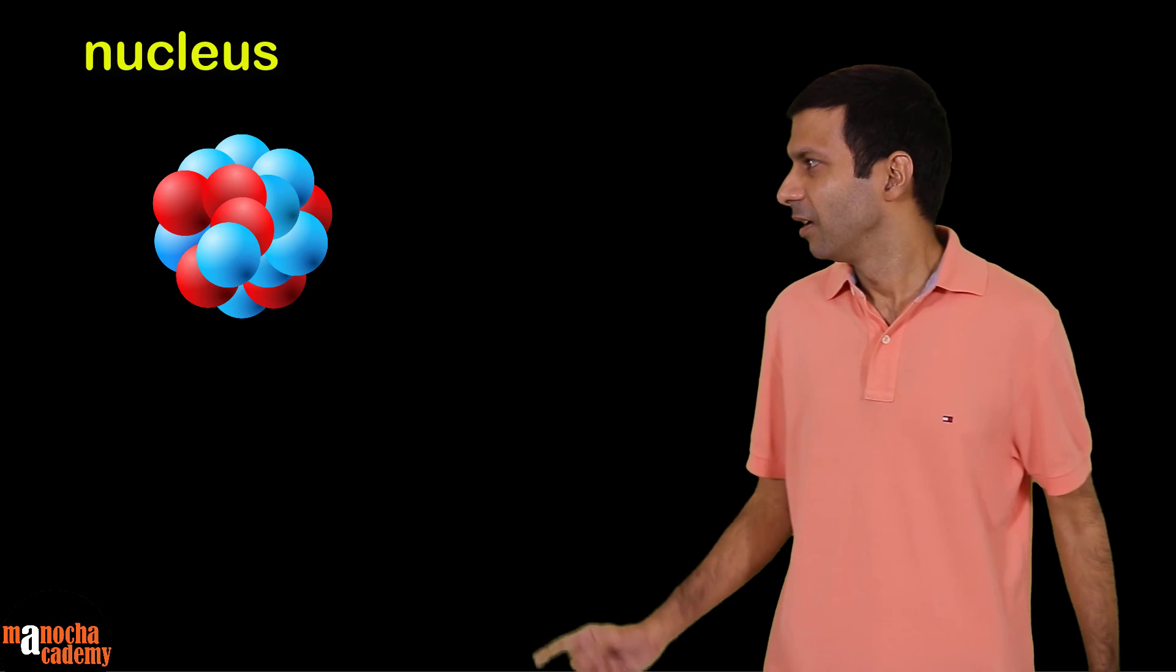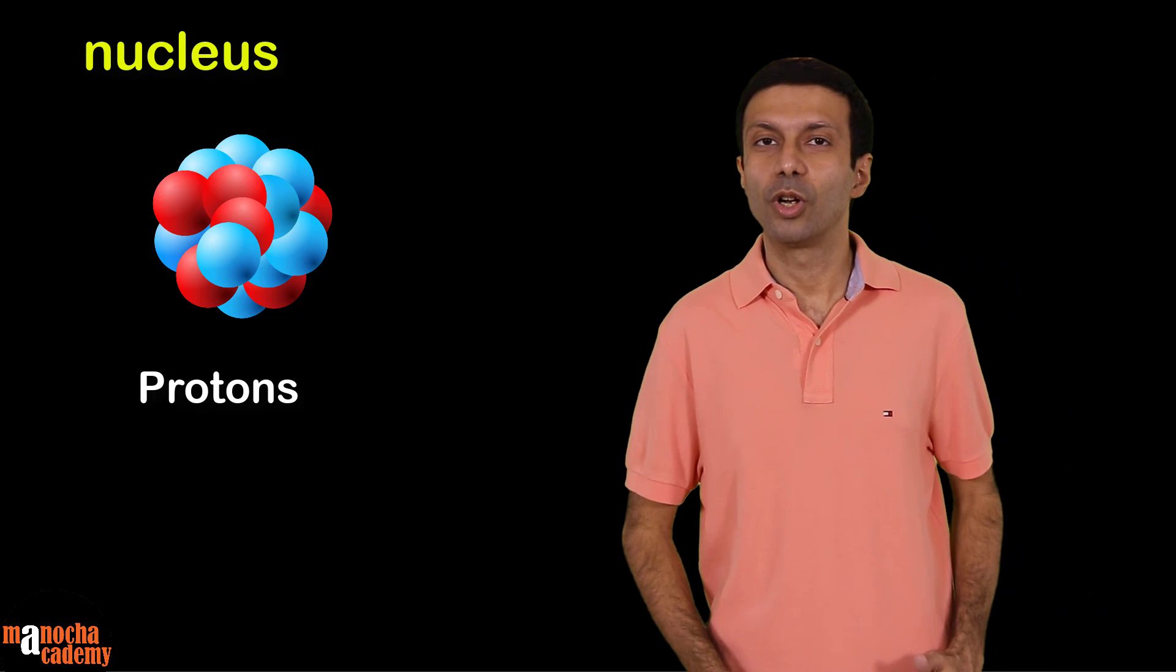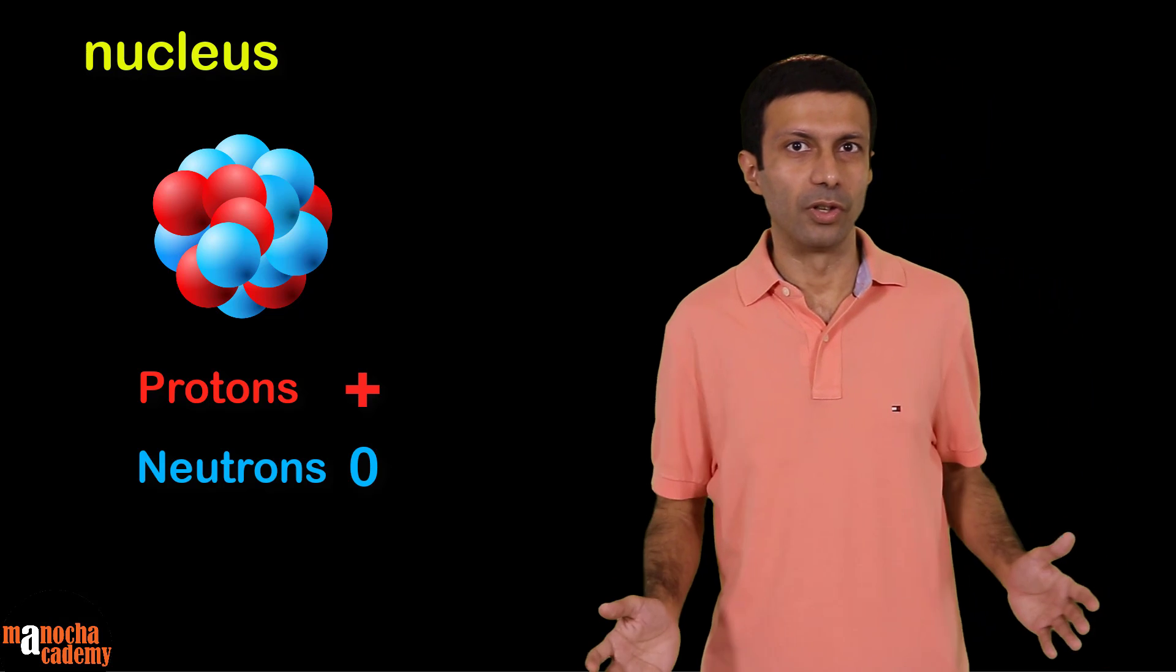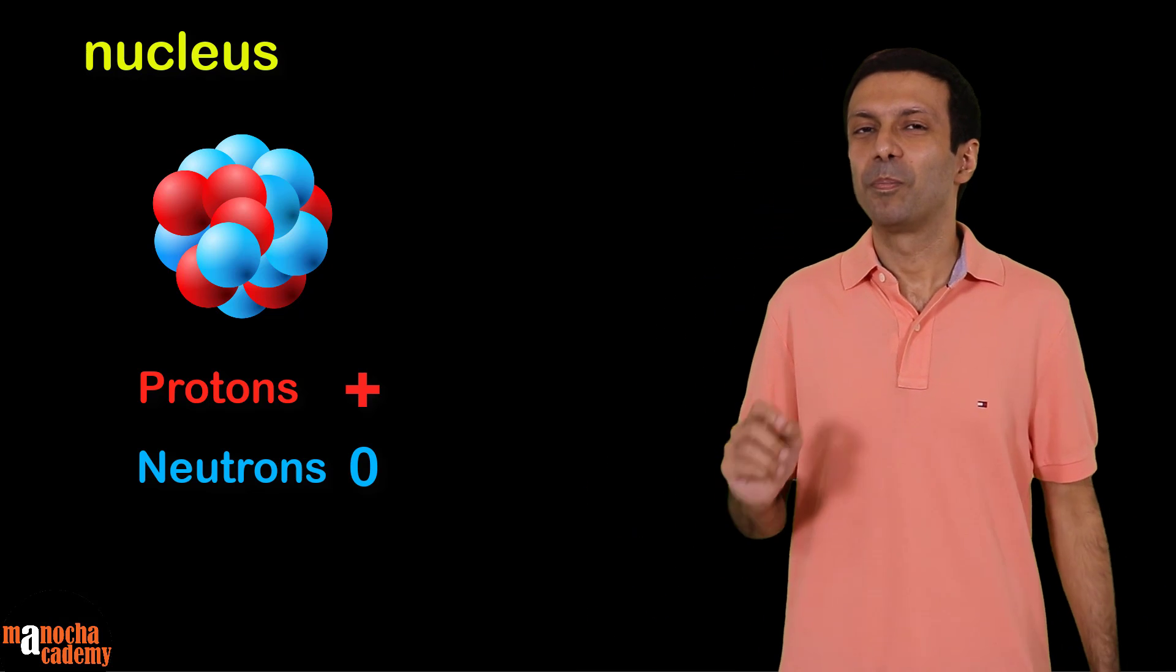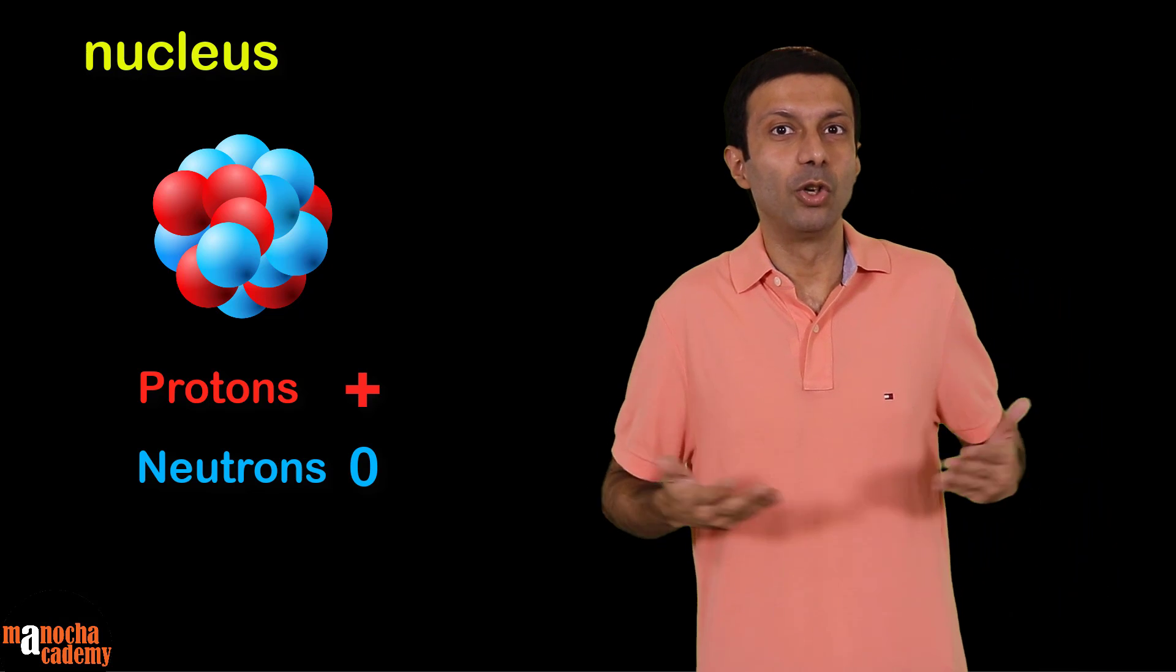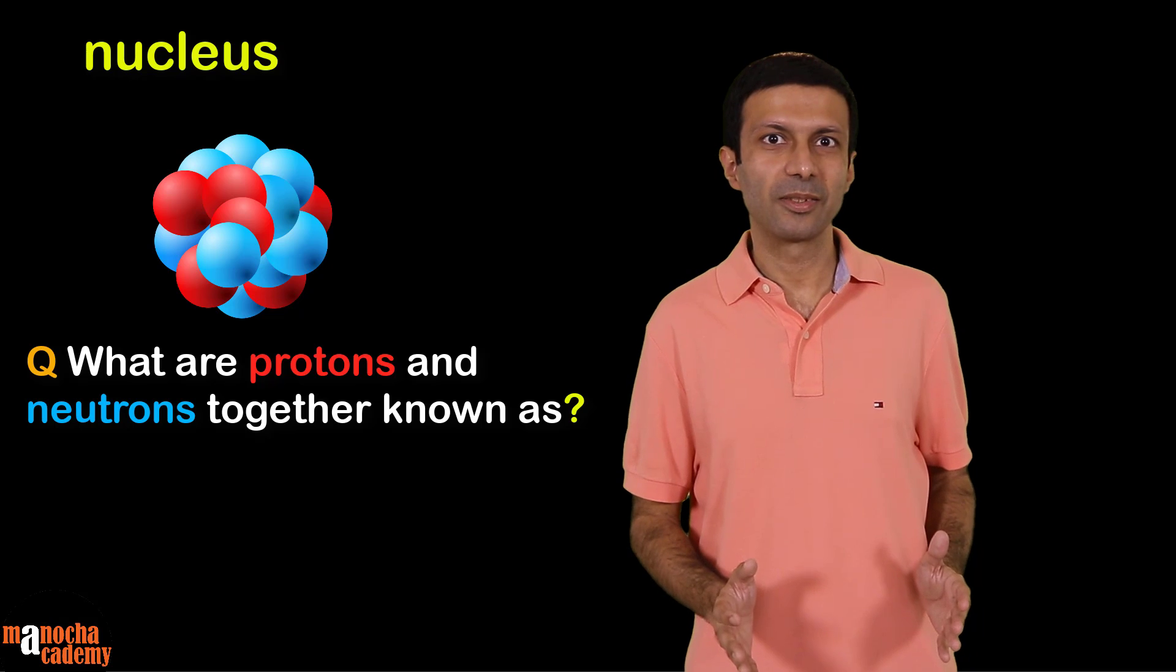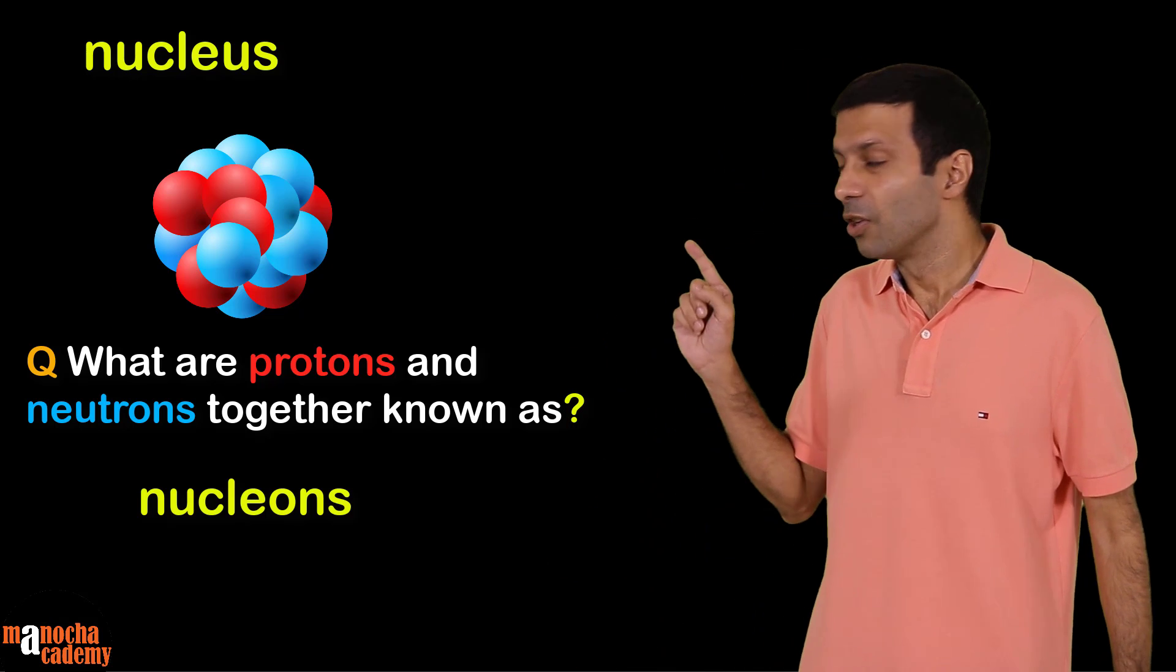As you can see, there are two types of particles in the nucleus: protons and neutrons. Protons are positively charged particles and neutrons are neutral. They have no charge. It's easy to remember: P for proton, P for positive, and neutron sounds like neutral. They have zero charge. Now do you know what the protons and neutrons are collectively known as? That's right, nucleons, because they are in the nucleus of the atom.